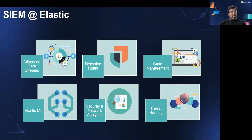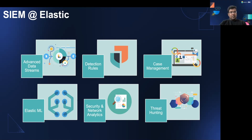We use Elastic for SIEM use cases — that was actually how we initially started using Elastic. We use advanced data streams, machine learning, machine rules, case management, threat hunting, and network and security analytics. Elastic provides more than 500 pre-built rules, which is amazing. We also create our own detection rules to meet compliance requirements for threat and other compliance aspects.